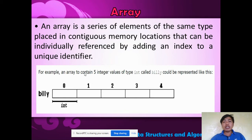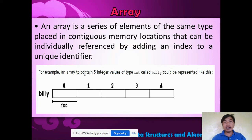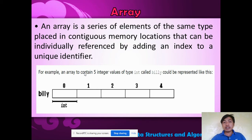According to the definition, an array is a series of elements — a group of elements forming a linear, sequential arrangement of the same type. So all elements must have the same type: if integer, the array is integer; if character, all elements are character; if string, all elements are string. And those elements are placed in a contiguous memory location.